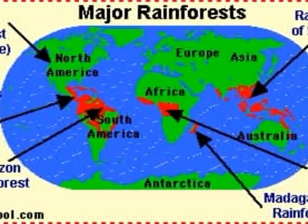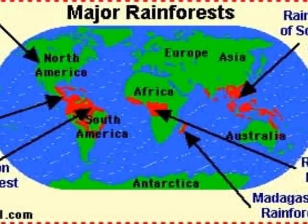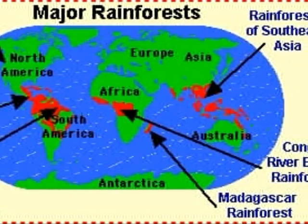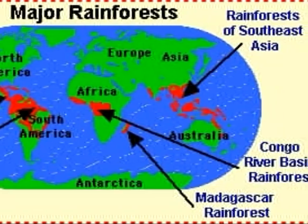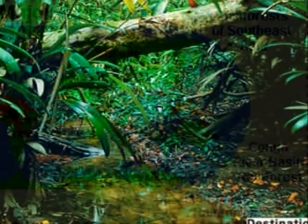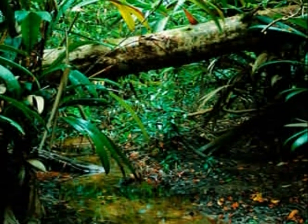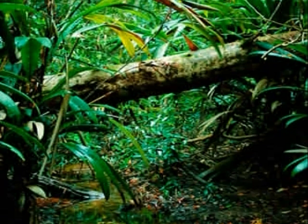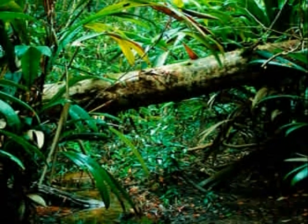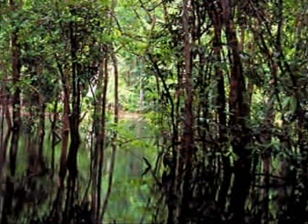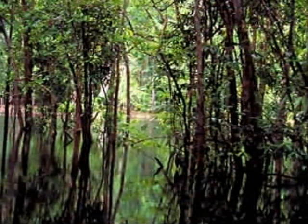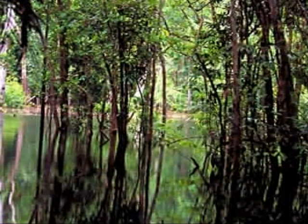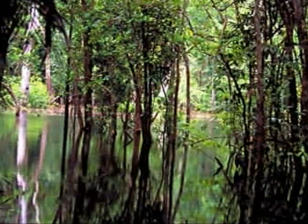Temperate rainforests are found along the coast of the United States. Both types of rainforests are rich in plants and animals. Rain falls throughout the year. Tropical rainforests are Earth's oldest ecosystem.